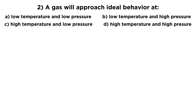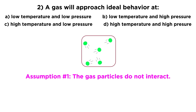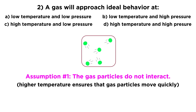Looking at number two, we're trying to describe ideal gas behavior. What are the assumptions we're making with an ideal gas? Assumption number one is that the gas particles do not interact — they're just little points that fly around and bounce. In terms of temperature, this presumes higher temperature, meaning gas particles move very quickly. If polar gas molecules pass by each other very slowly, they have time to make electrostatic interactions, so ideal gas behavior requires higher temperatures.